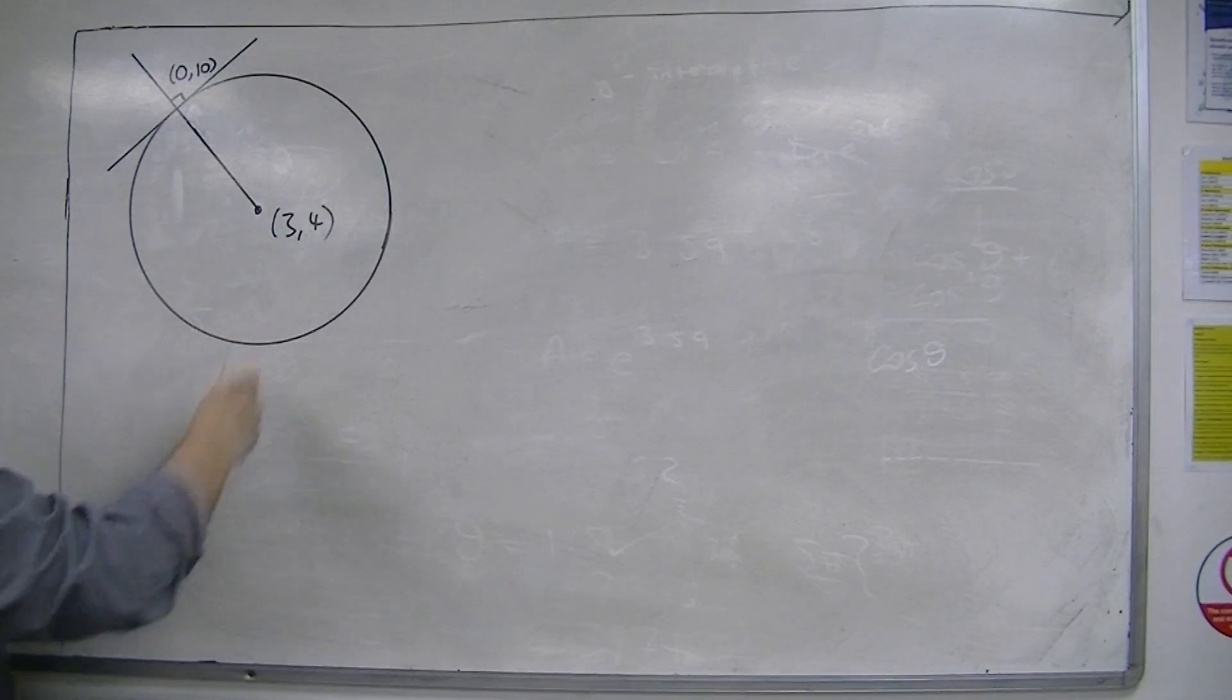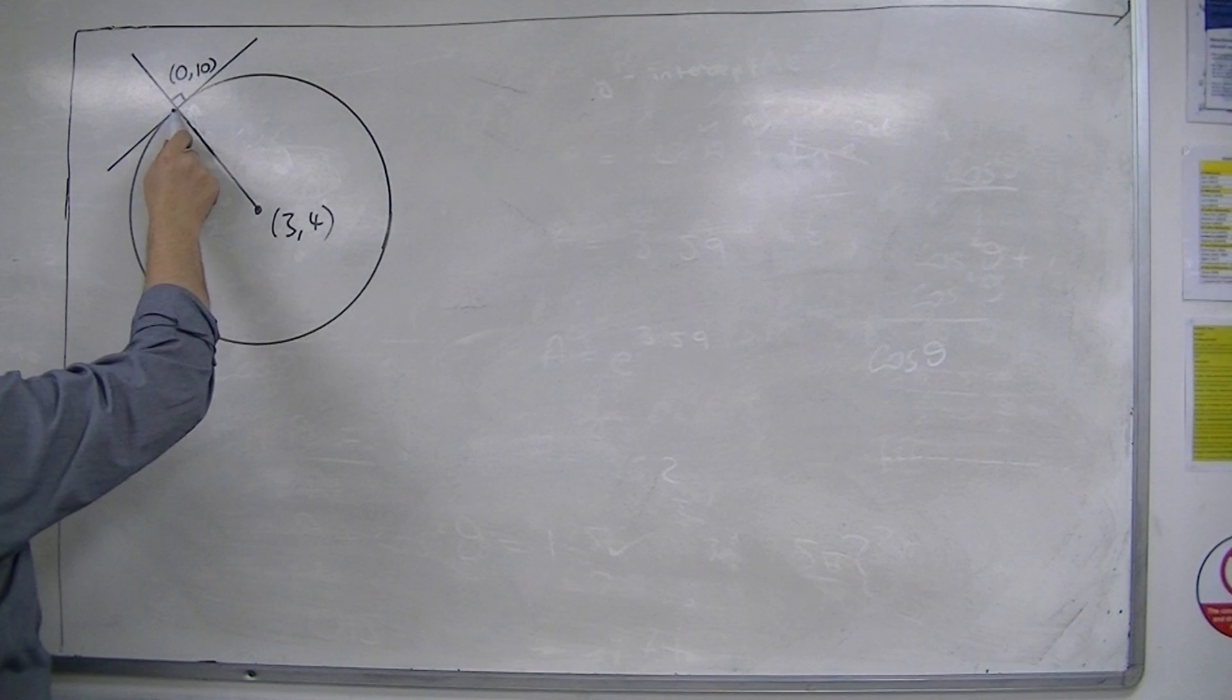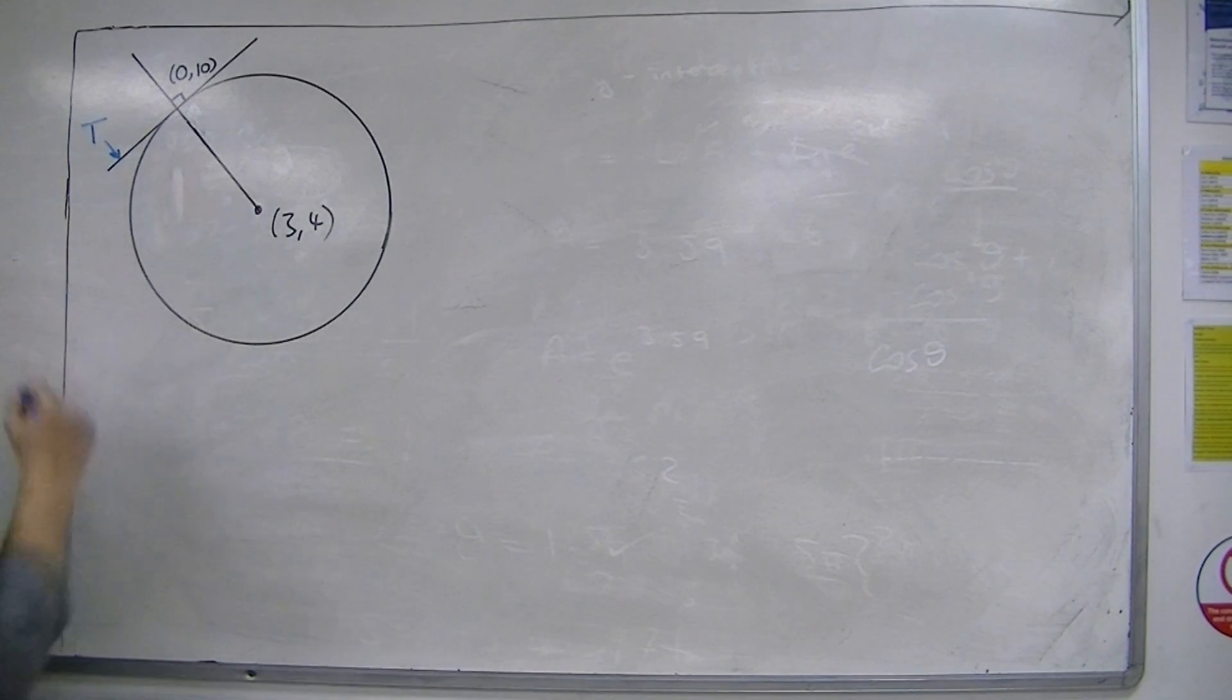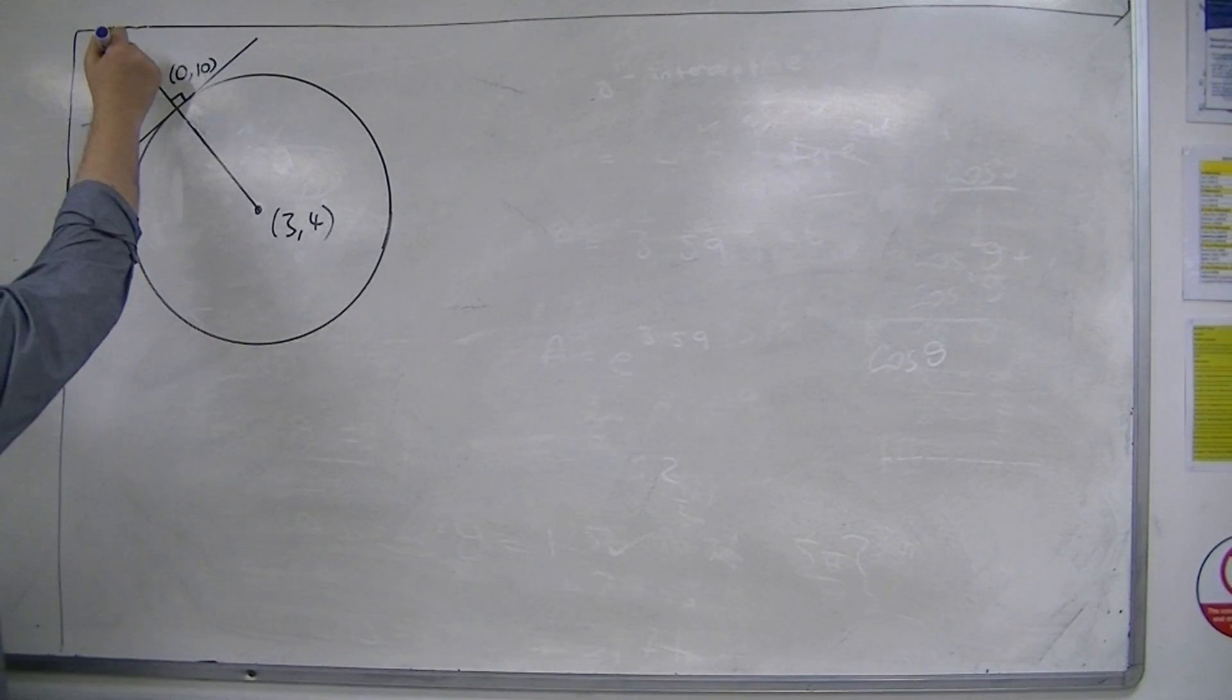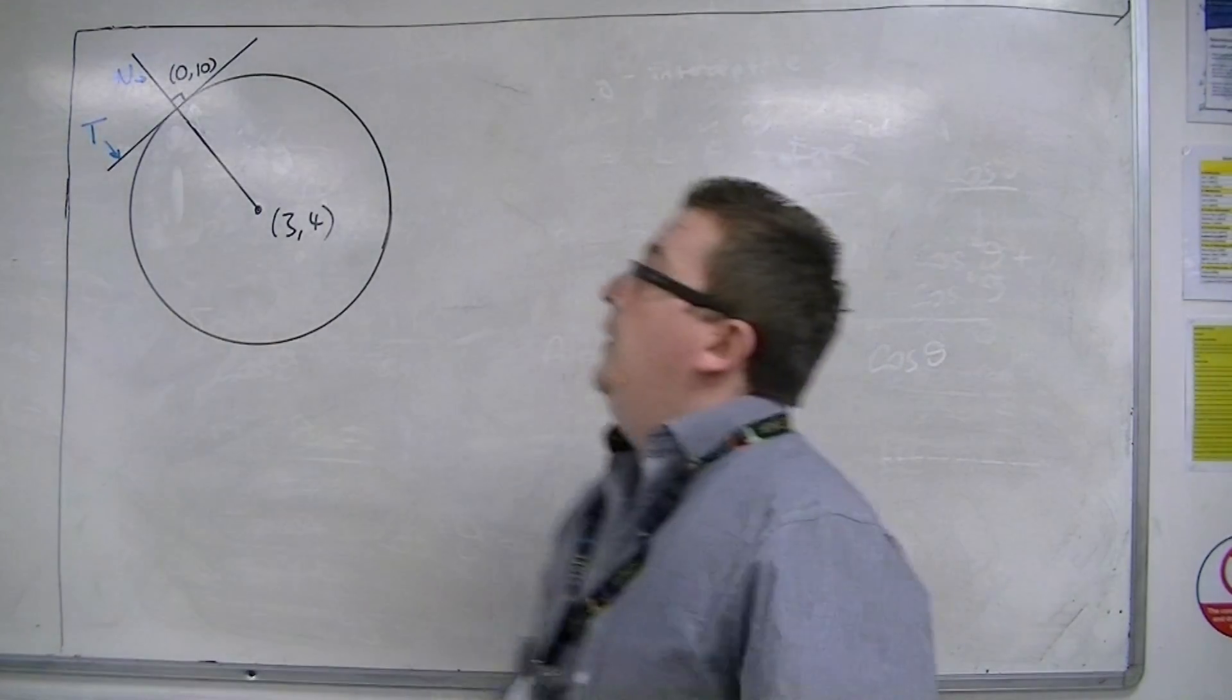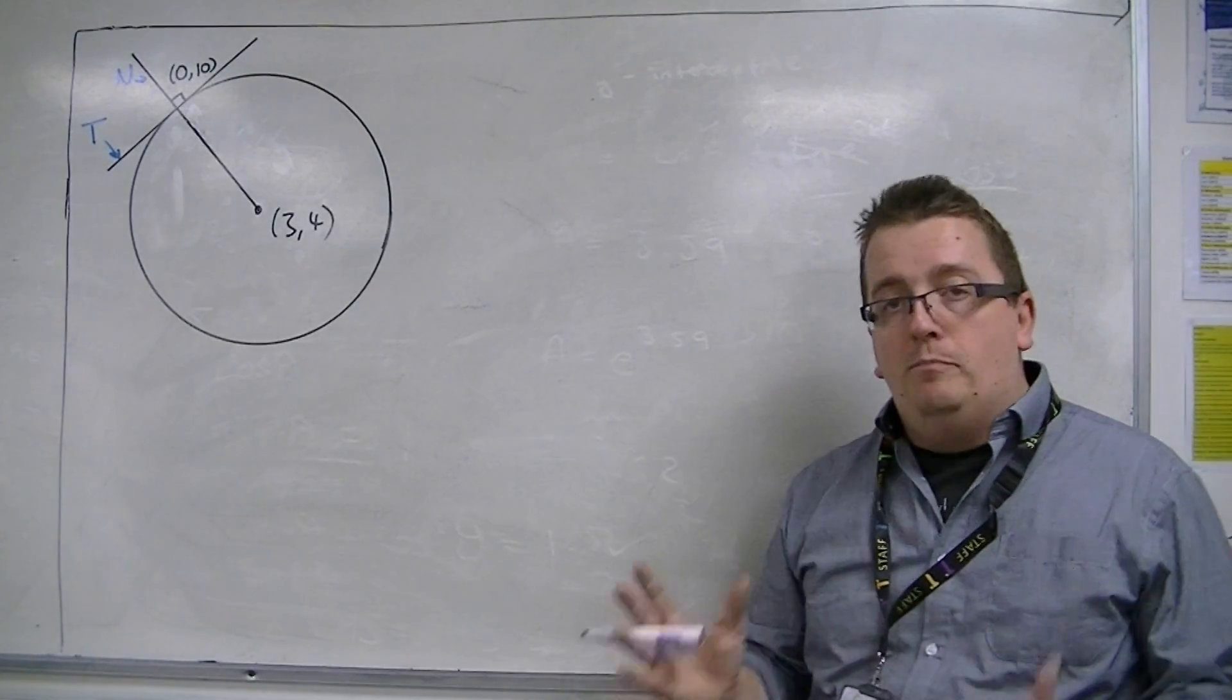The tangent line is the line that briefly touches the circle at that one point (0, 10). That is the tangent line. The line that is at right angles to it is the normal. So you've got these two lines, the tangent and the normal. We need to find the equation of both.